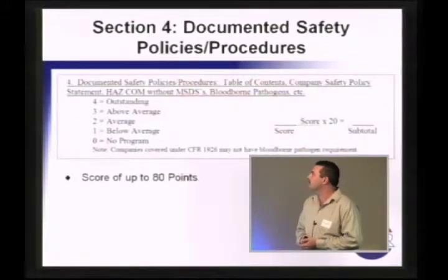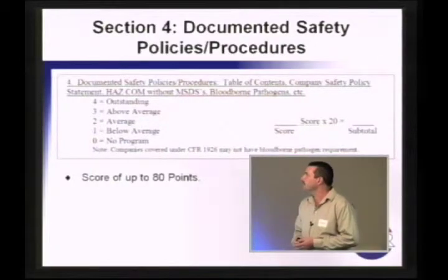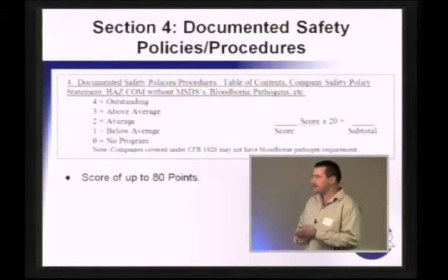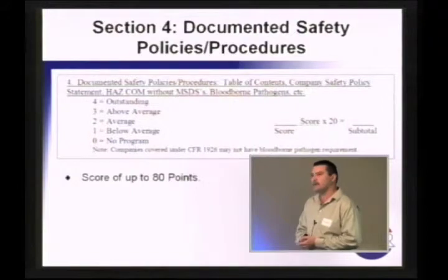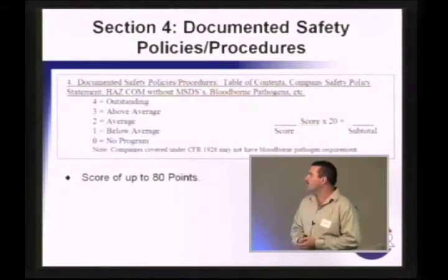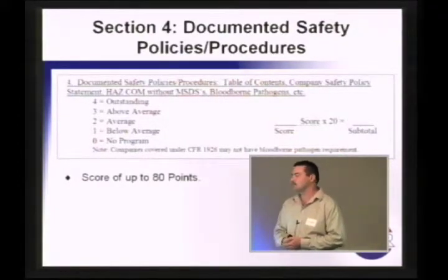Section 4, documented safety policies and procedures. We actually go in and we look at your company safety policies, HAZCOM without the MSDSs, bloodborne pathogens, etc. These are the programs you actually submitted. We're going to go in and evaluate them. And as you can see, there's a scoring of 4 for outstanding, 3 above average. We apply that times 20 with a possible score of 80 points.